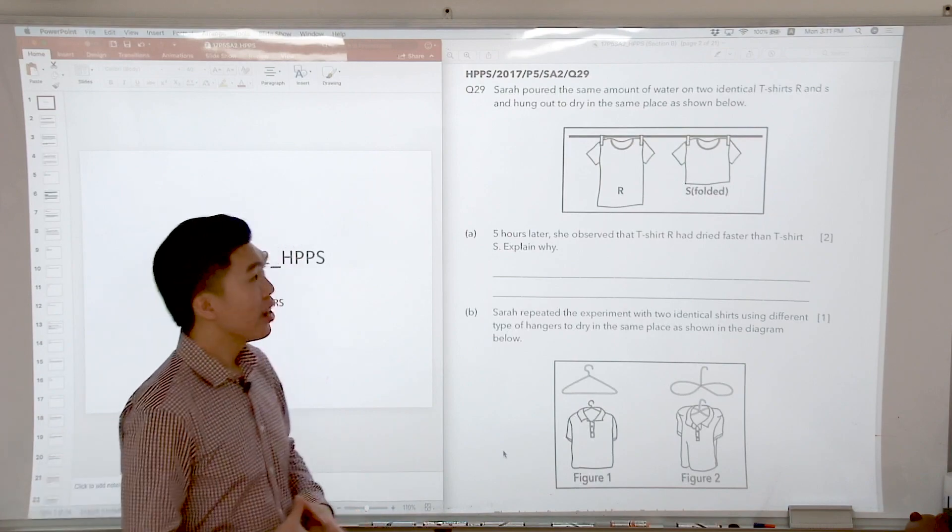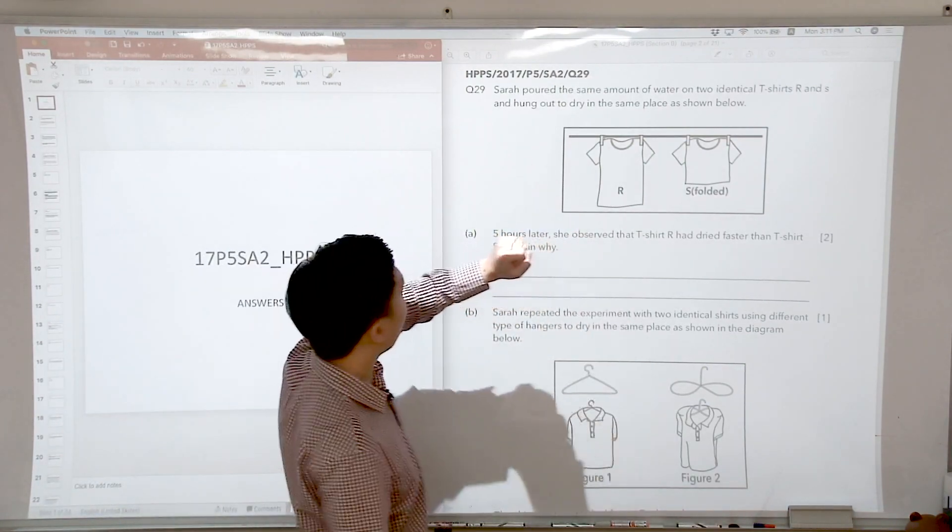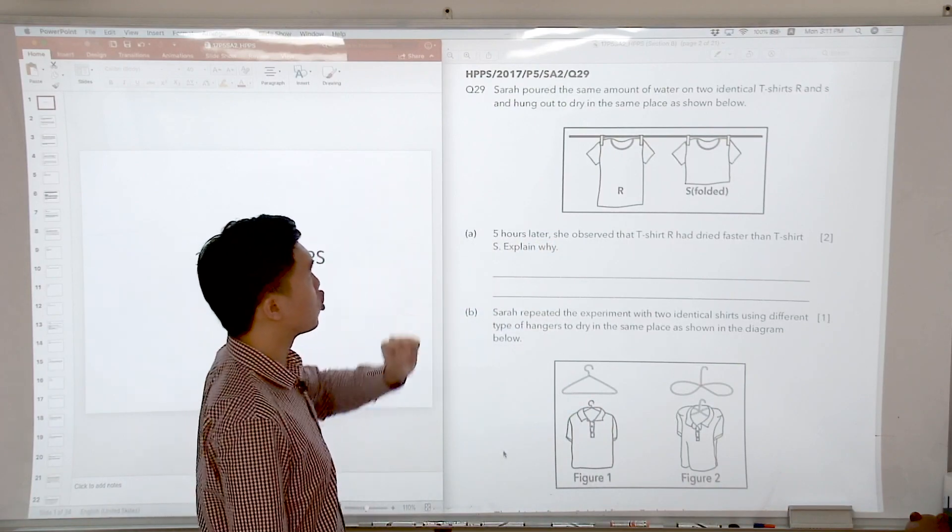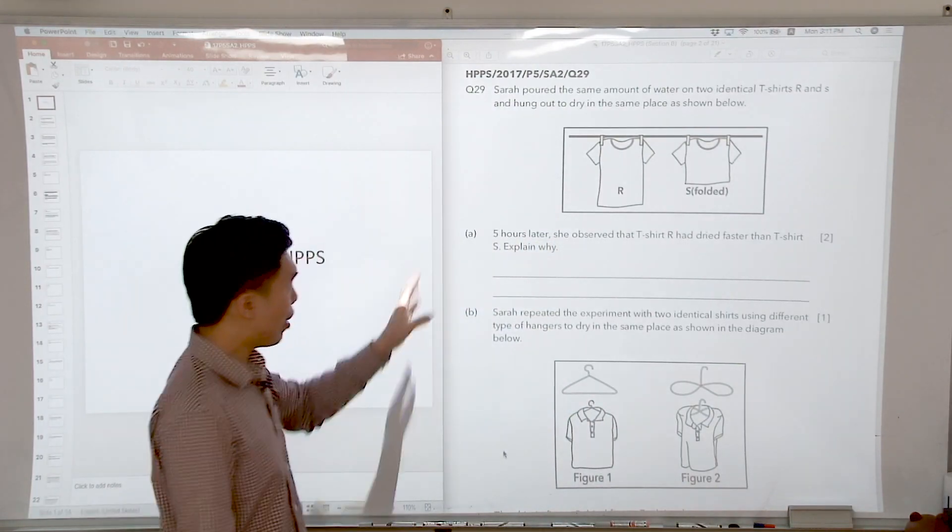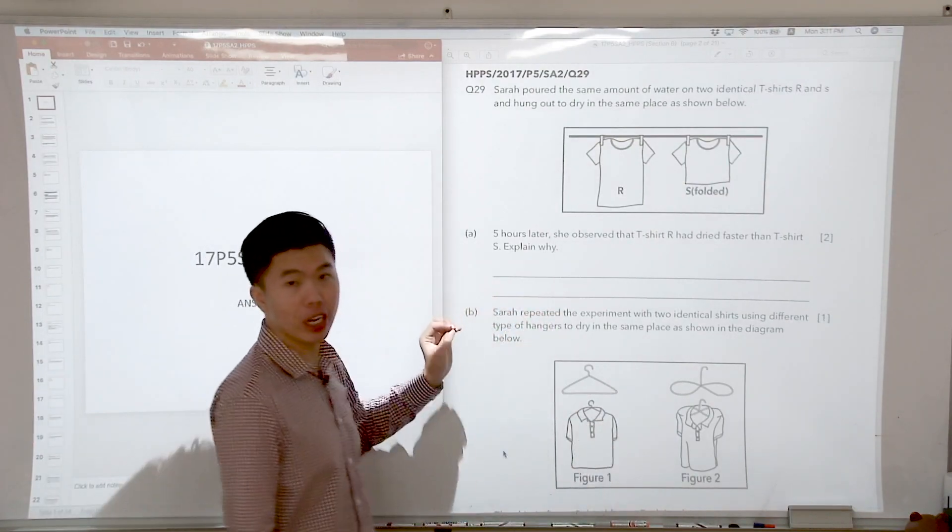Let us start with question 29. Sarah poured the same amount of water on two identical T-shirts R and S and hung them out to dry in the same place as shown.